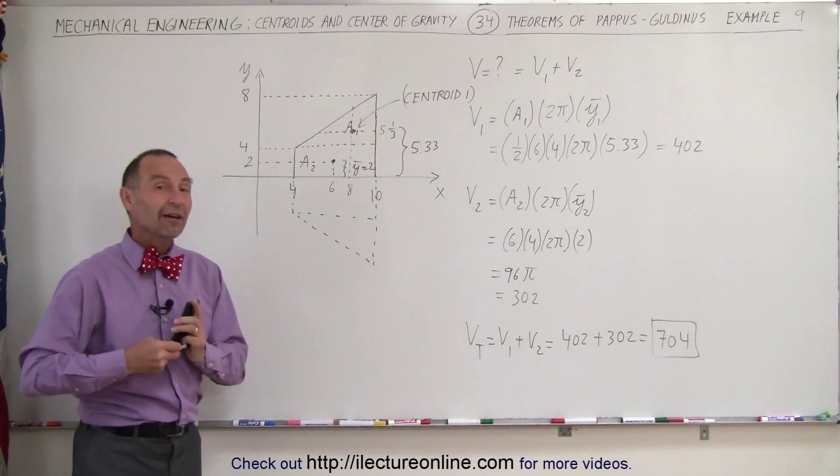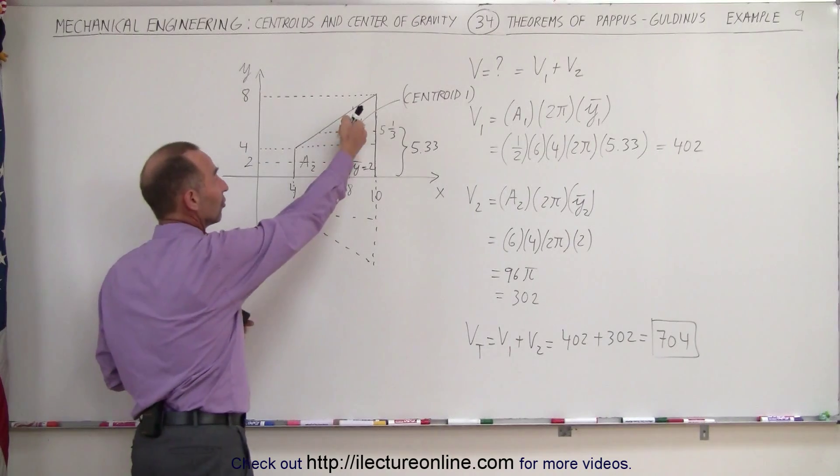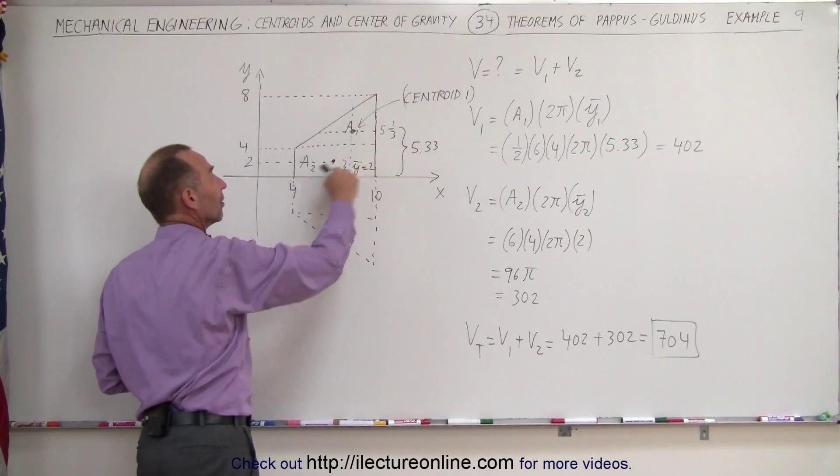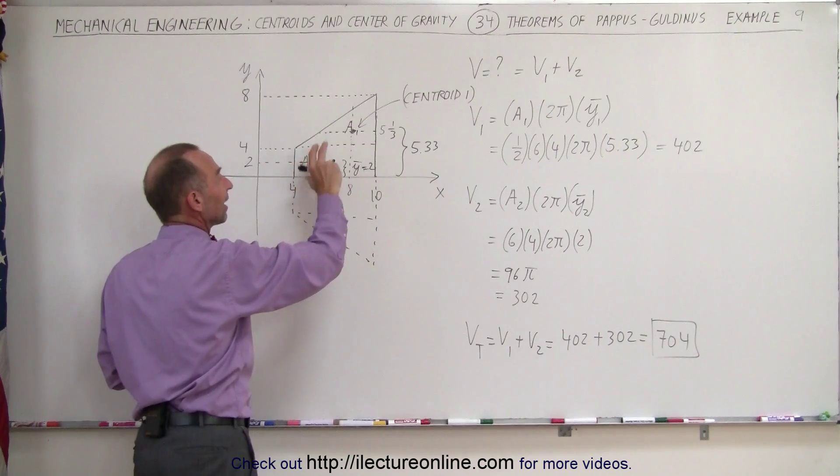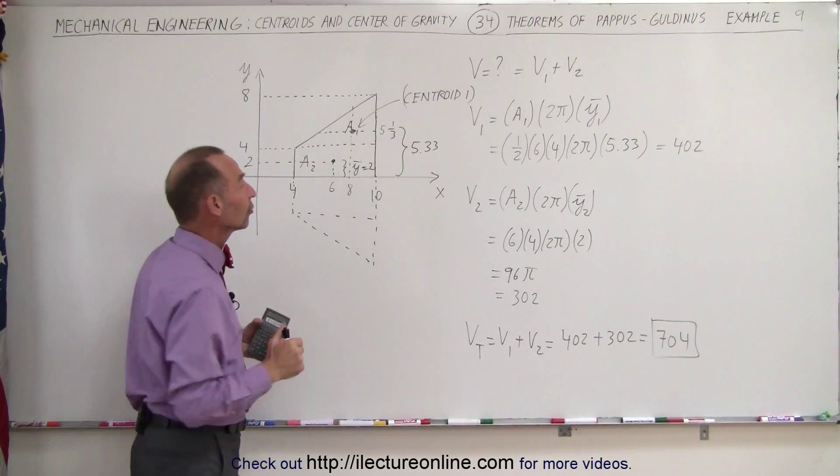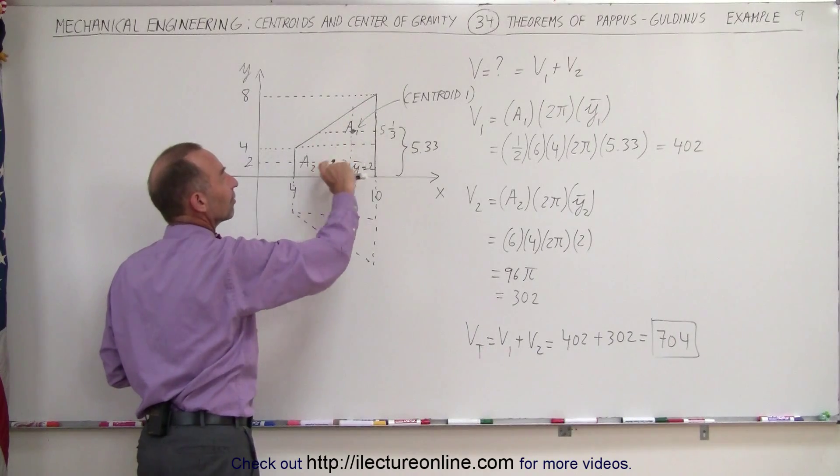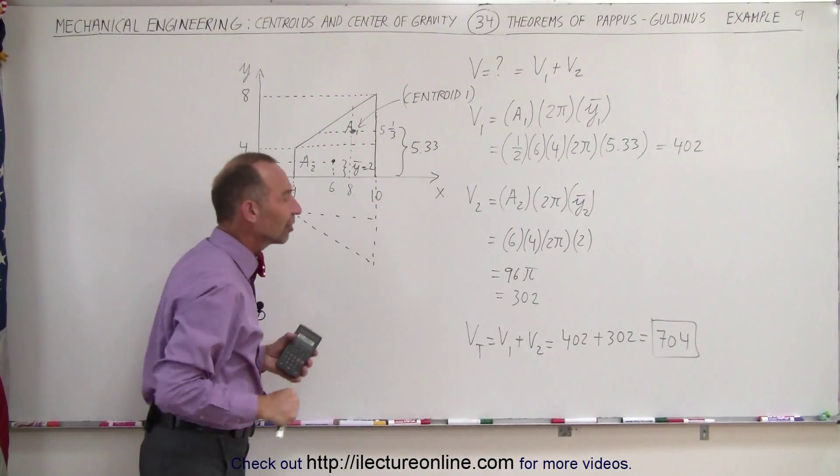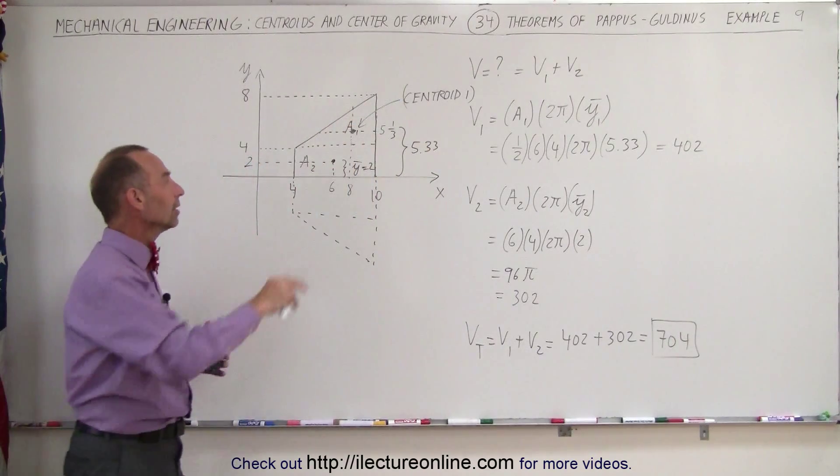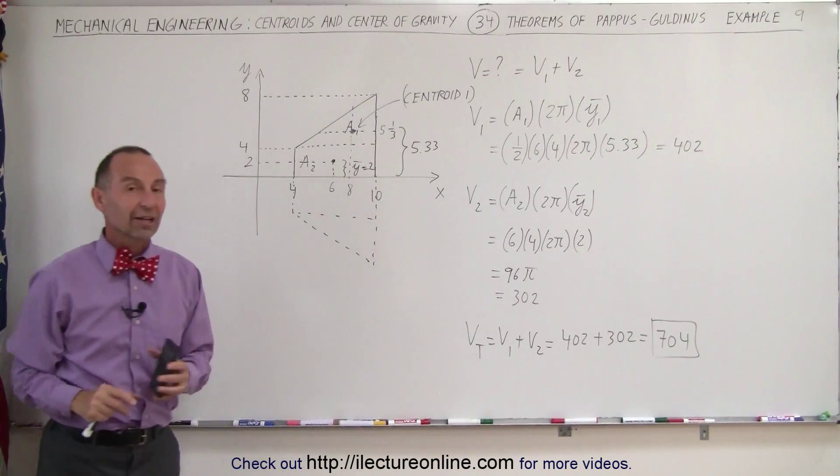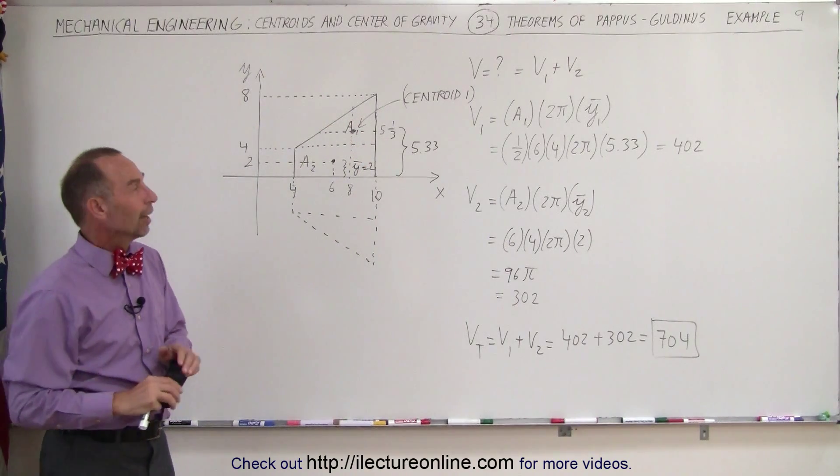You can see that if you have a surface which gets revolved around the x-axis, but the surface is shaped in such a way that you cannot find the centroid easily of the single surface, then you divide it into whatever sections you need to, you then find the volume separately, add the volumes together, you get the total volume created from the surface that's then revolved around the x-axis. And that's how we do that.